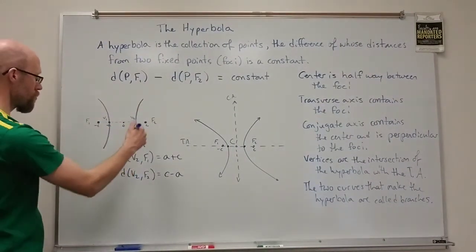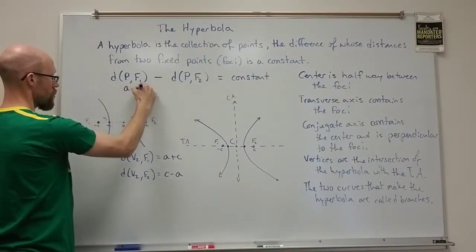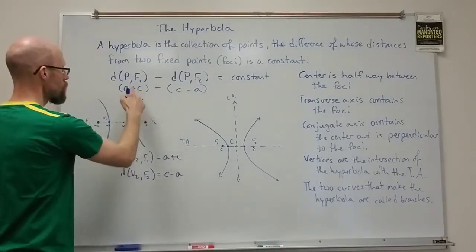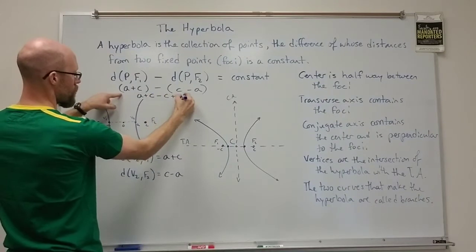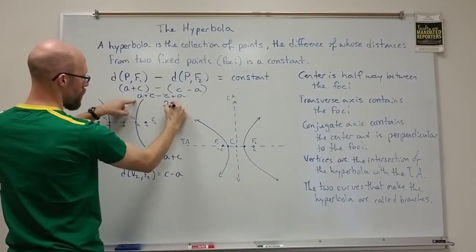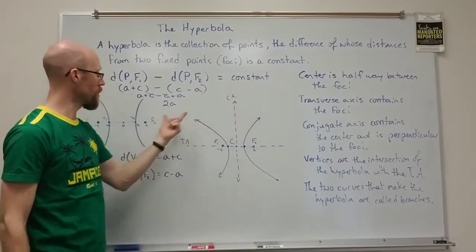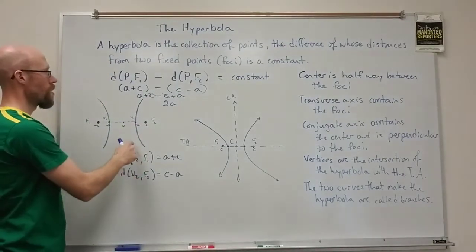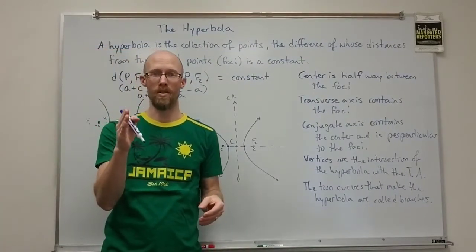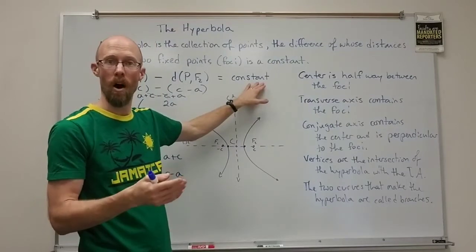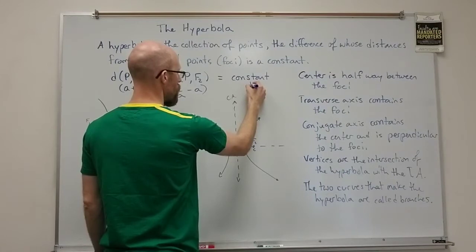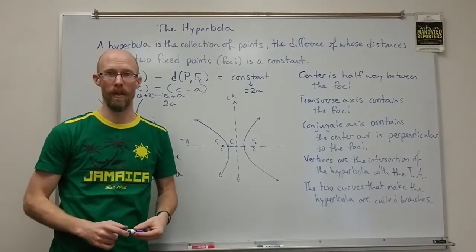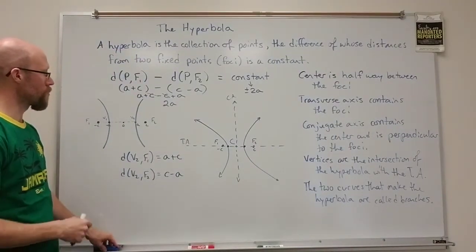So 2a must be the constant — the difference of distances equals 2a. That means the constant is always equal to positive or negative 2a, positive or negative depending on which side of the hyperbola we're on. The distance from the center to the vertex is half of this constant. This tells us about the vertices and how they relate to the constant.